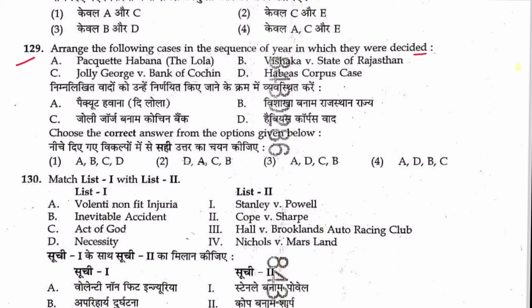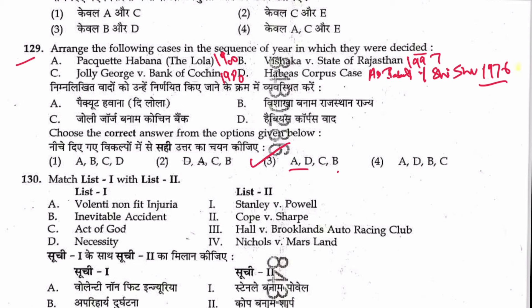Question 129: Arrange cases in sequence of year decided. Pakatan Harapan case was decided in 1900. Vishaka vs. Rajasthan — 1997. ADM Jabalpur vs. Shivakant Shukla (Habeas Corpus case) — 1976. Jolly George Varghese vs. Bank of Cochin — 1980. Sequence gives E, D, C, V. Answer is 3.